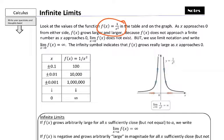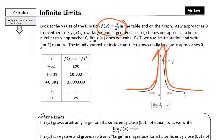If we look at the example in this drawing, we can see that if we go from the left side, as we get closer and closer to 0, notice the y values go up to infinity. And as we approach from the right side, notice that the y values also go up to infinity.